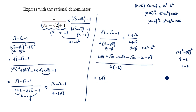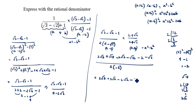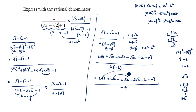In the numerator, root 18 equals 3 root 2, so we have 2 root 3 plus 3 root 2 minus 2 root 2 minus root 12 minus 2 minus root 6. Root 12 equals 2 root 3. The terms 2 root 2 and 3 root 2 combine, and 2 root 3 minus 2 root 3 cancels, leaving root 2 minus 2 minus root 6 divided by minus 4.